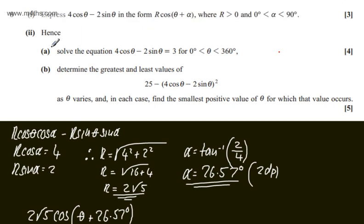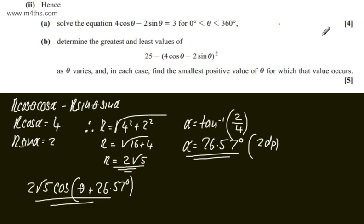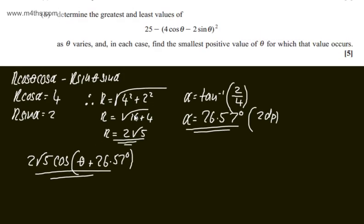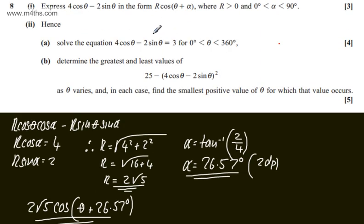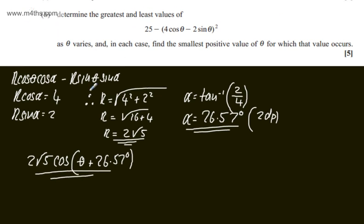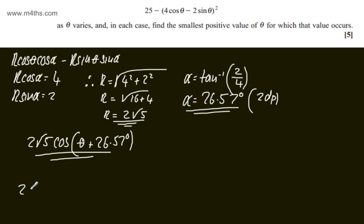In the second part, we're asked to solve the equation 4cosθ minus 2sinθ = 3 for θ between 0 and 360 degrees. This part carries 4 marks. Using the expression we just found, we set 2root5·cos(θ + 26.57°) equal to 3.